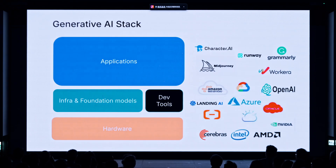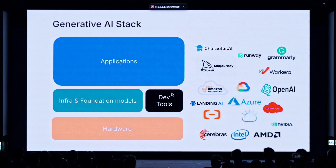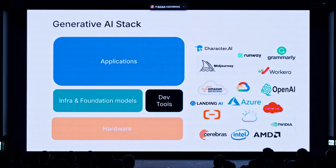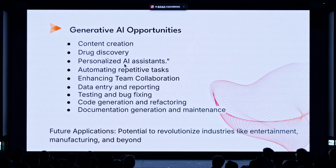This is how I see the industry landscape. At the bottom layer, we have the hardware — Cerebras, Intel, AMD. In the middle layer, you have infrastructure and foundation models. And in the top layer, this application layer is where there is a ton of opportunity for vertical AI startups. There will be in the next few years a tax AI winner, a planning AI winner, a financial AI winner, healthcare. These applications can range from content creation to drug discovery to data entry to test and bug fixing. The future is looking very, very promising.